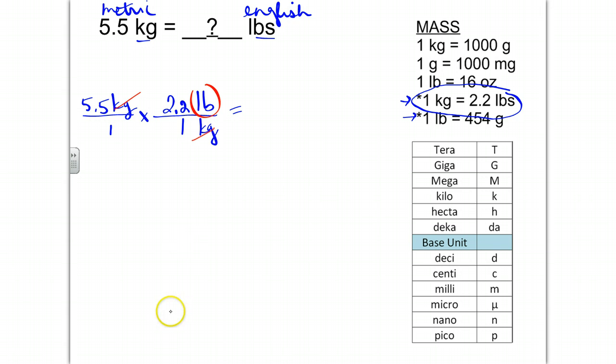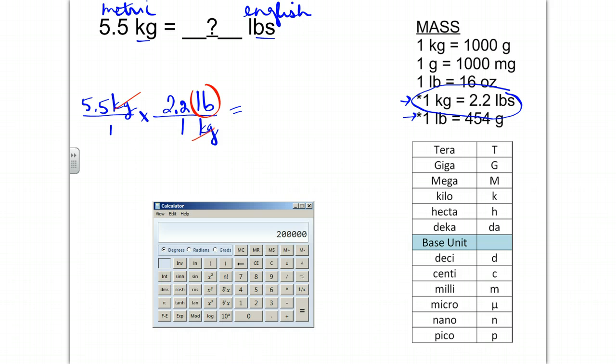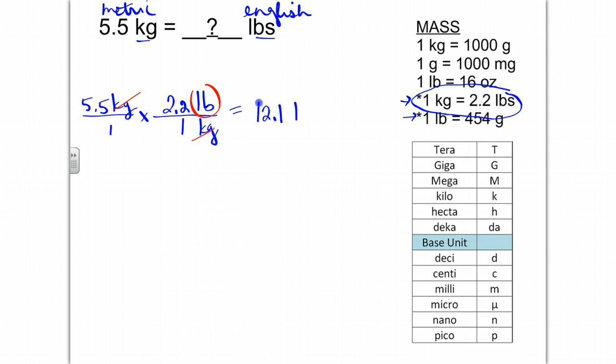So now we're going to calculate this. 5.5 times 2.2 is going to give me 12.1 pounds.